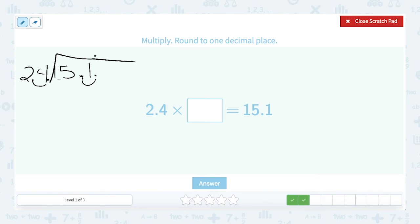Okay 24 does not go into 1. It doesn't go into 15. It will go into 151. 24 is very close to 25. And 151 is very close to 150. I know that 25 would go into 150 6 times. So I'm going to make an educated guess that 6 is going to go up there in my whole number place.